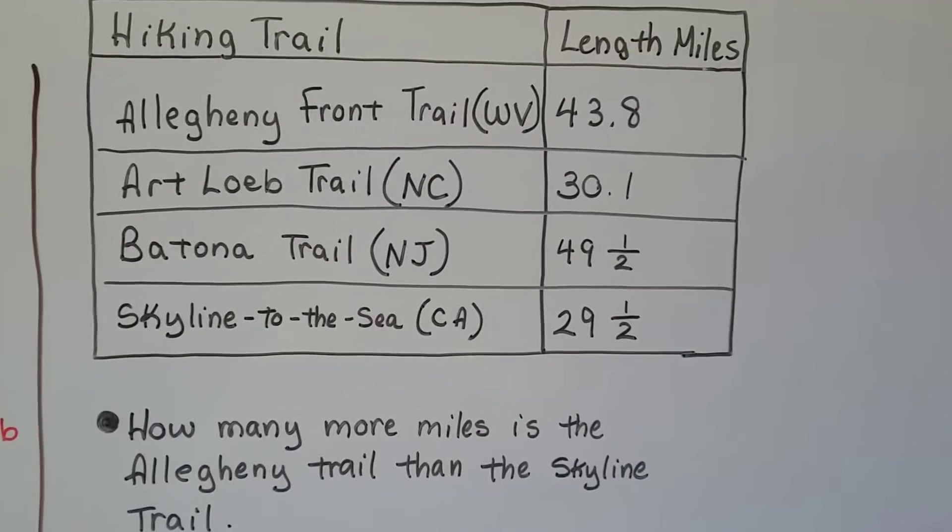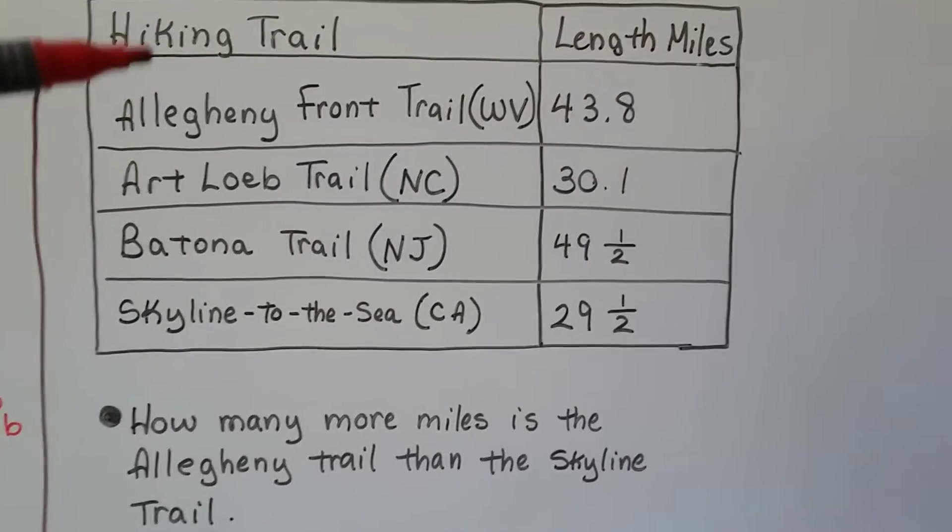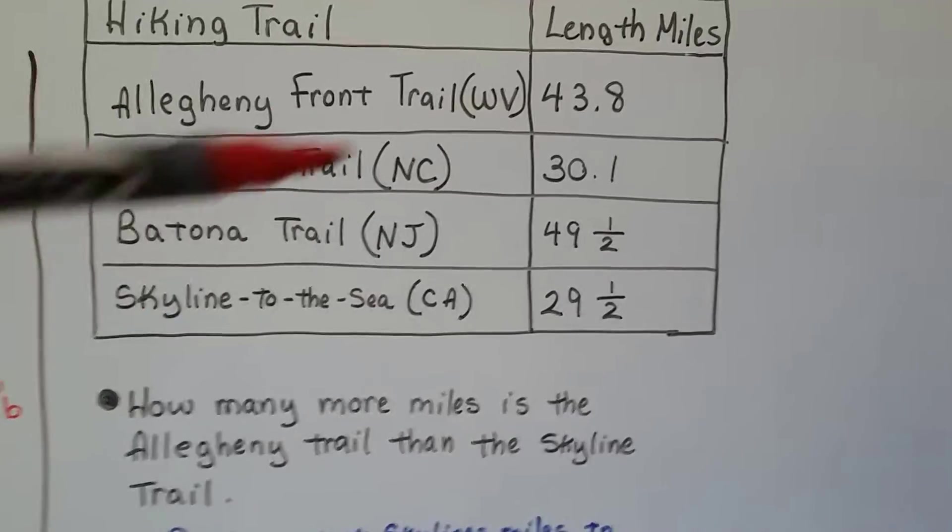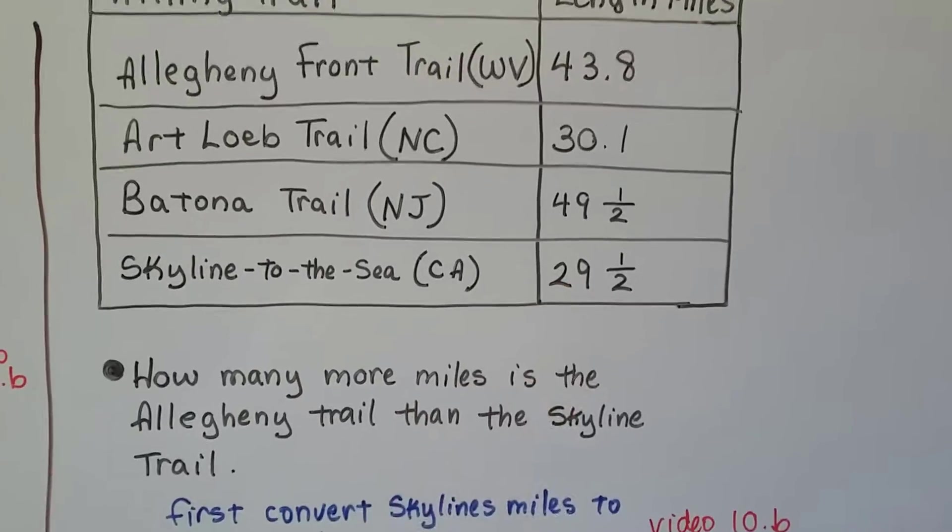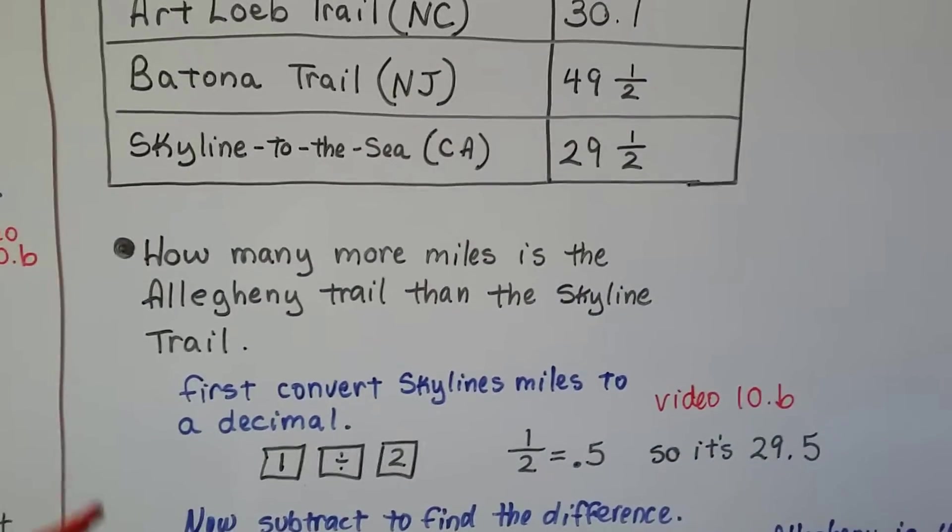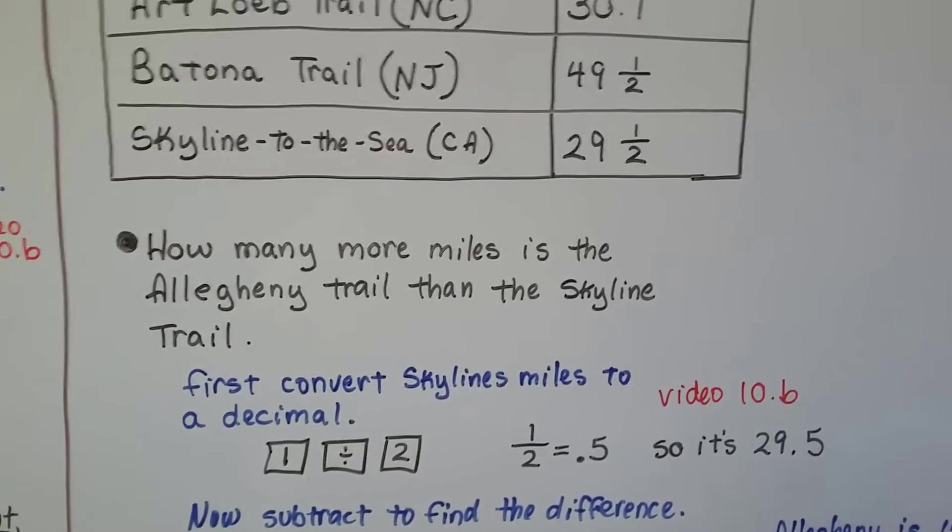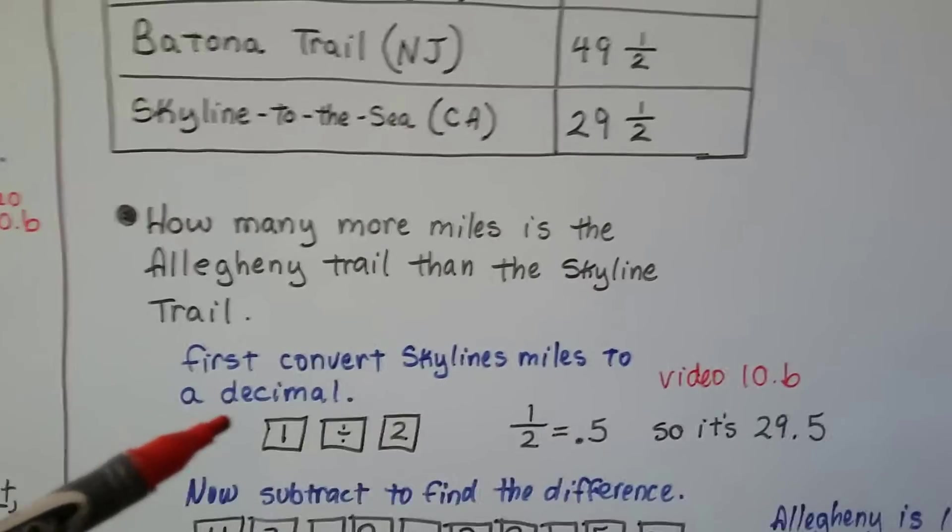Our question is, how many more miles is the Allegheny Trail than the Skyline Trail? So, it wants to know, how many more miles is this Allegheny Trail than this Skyline Trail? We have 43.8 and we need to subtract 29 and a half. We have to convert Skyline's miles to a decimal so that we can do the subtraction. We can't have one as a fraction and one as a decimal. So, we do that. We convert the Skyline's miles to a decimal.